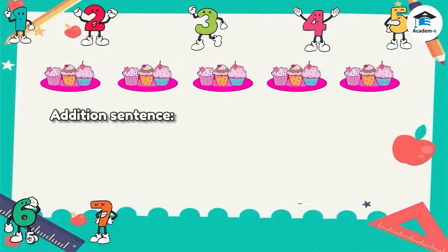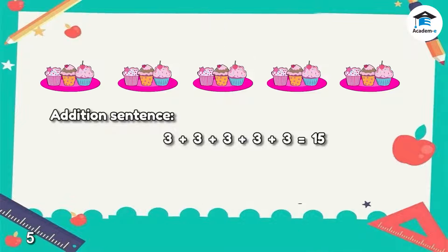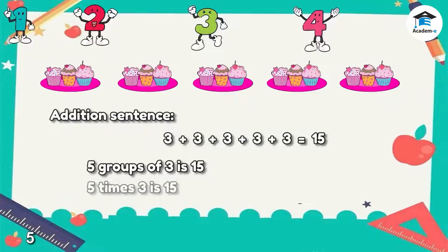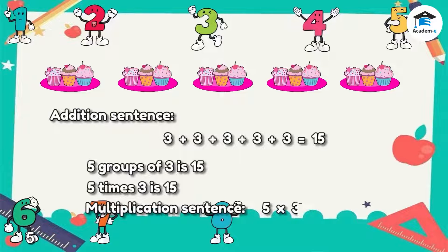In addition sentence, it is 3 plus 3 plus 3 plus 3 plus 3 equals 15. So, 5 groups of 3 is 15, and 5 times 3 is 15. In multiplication sentence, it is 5 times 3 equals 15.